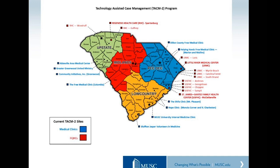This is a map of the state showing all the clinical sites collaborating in the program. We began with free clinics and volunteer clinics to reach patients who otherwise have difficulty receiving care, then branched out to FQHCs, which have provided a large number of patients. Our MUSC University Internal Medicine Clinic is the single academic-affiliated site involved.